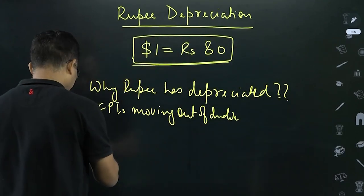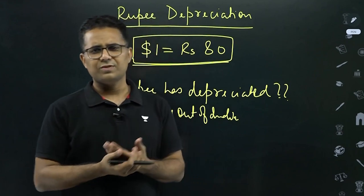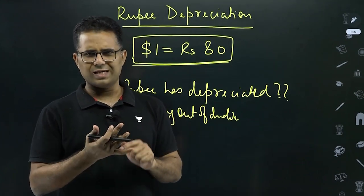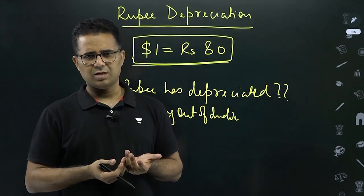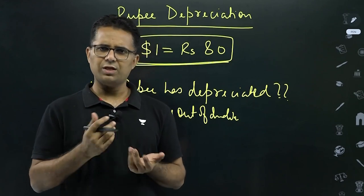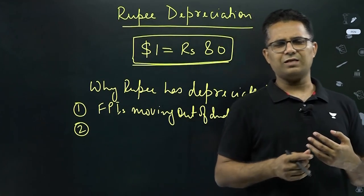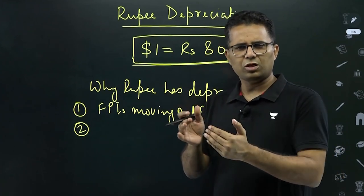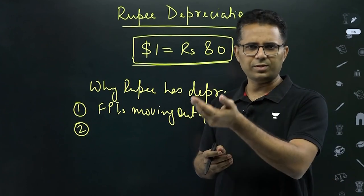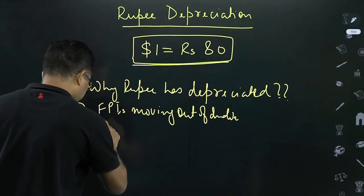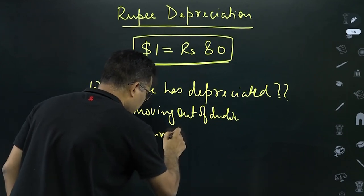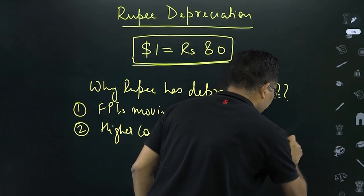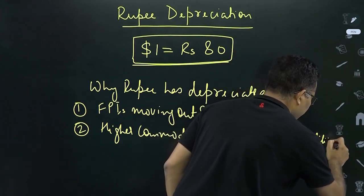One reason is investors moving out of India. The second reason is higher commodity prices — fertilizer, oil, gas — because of the Russia-Ukraine situation. These prices have increased and we are importing these commodities, so we need to pay more dollars. Our importers need to purchase more dollars from the forex market. When they purchase more dollars, the demand for dollar increases, dollar appreciates, and rupee depreciates.